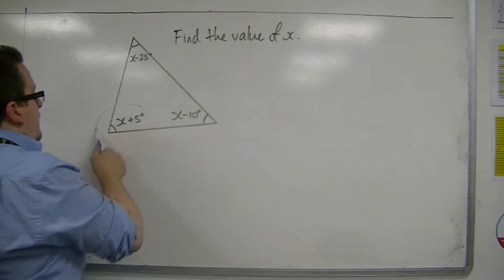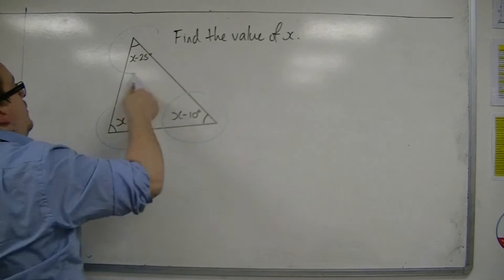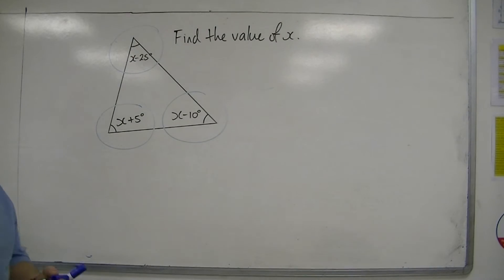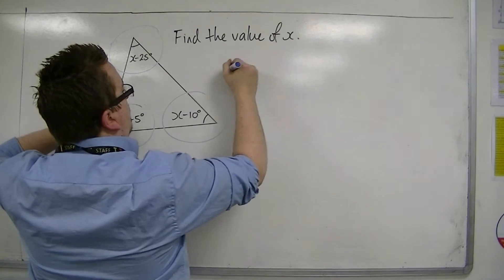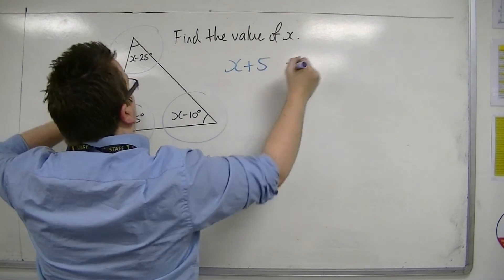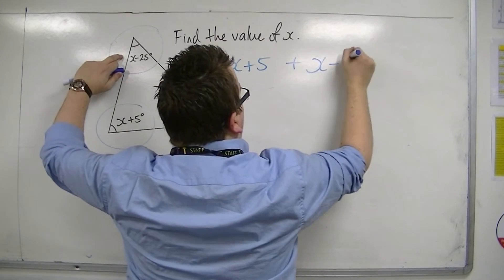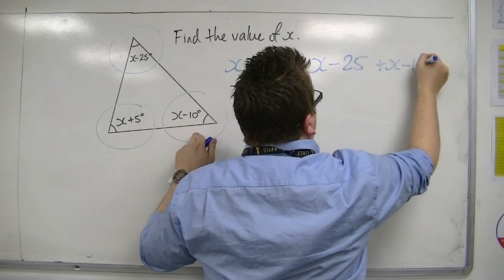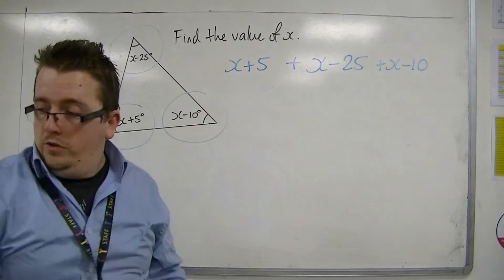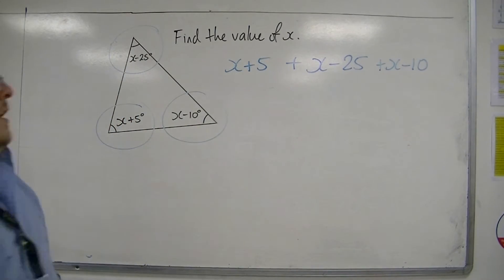So we know that if I add these three angles together, I should get 180. Adding x plus 5, x minus 25, and x minus 10 together should reach 180.